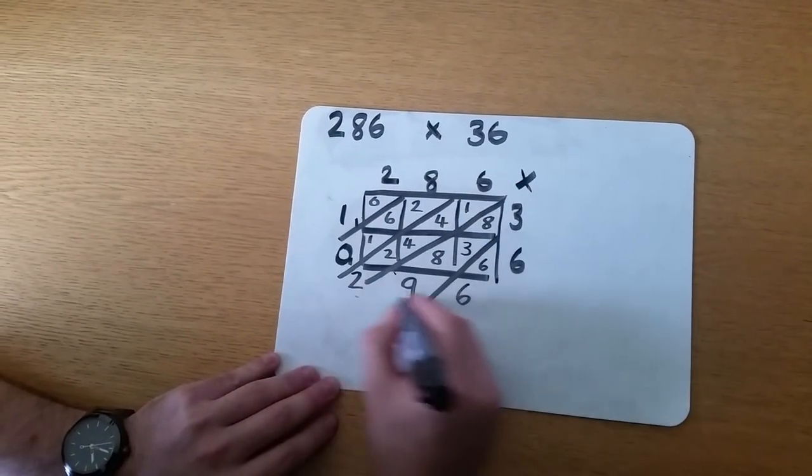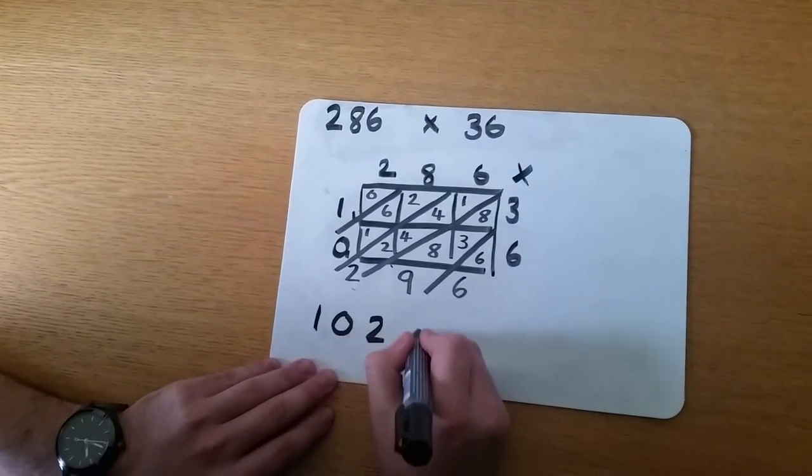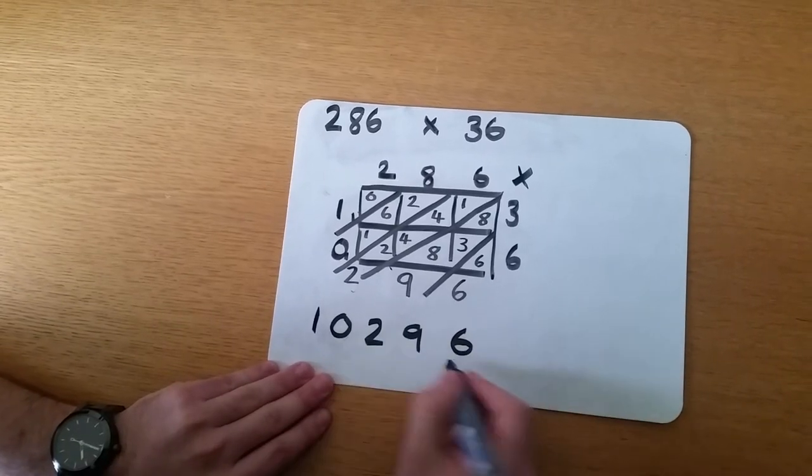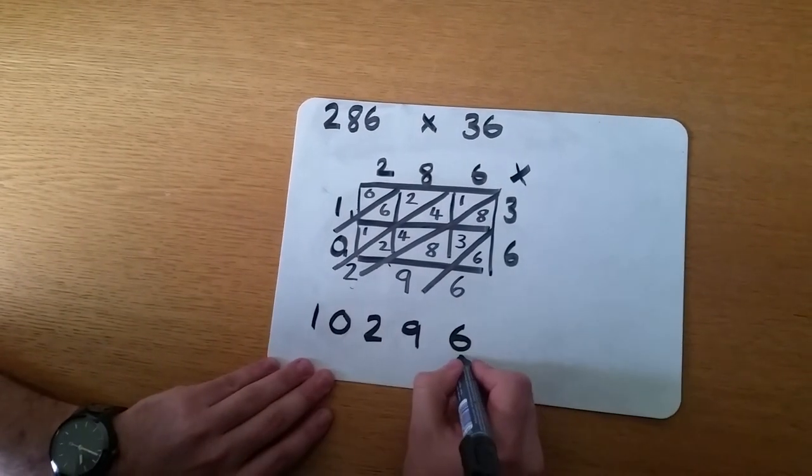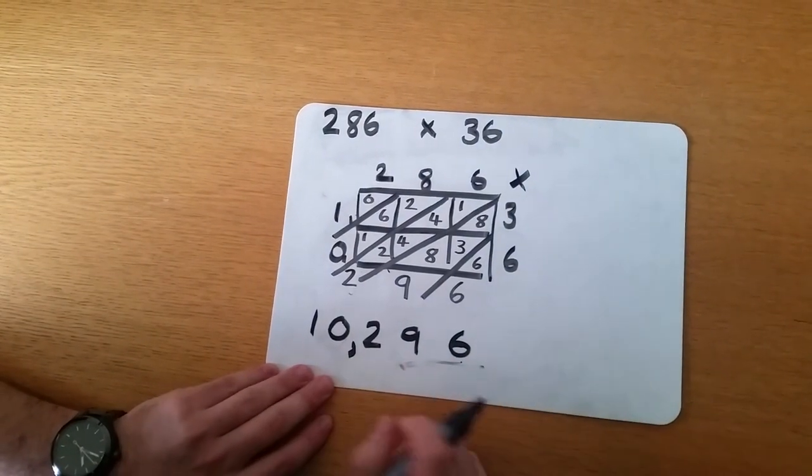I'm just going to write all these numbers out here that are on the side of the box. That's 1, 0, 2, 9, 6. This is our answer. If you would like to put a comma, you can count back 3. That will help you say the number. That's 10,296.